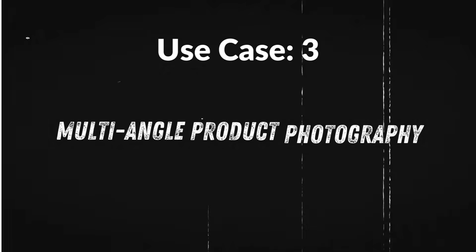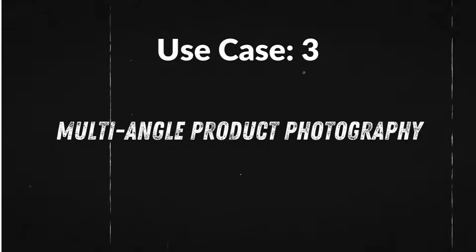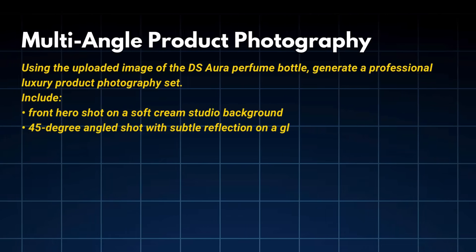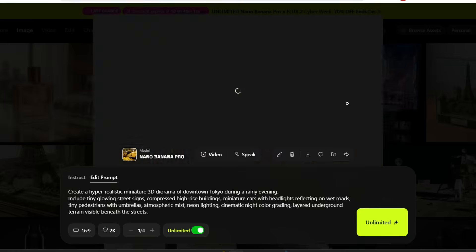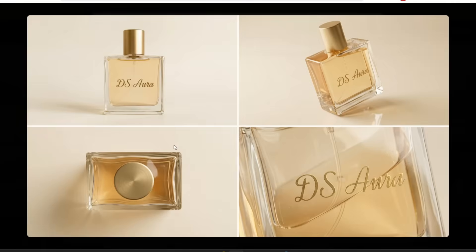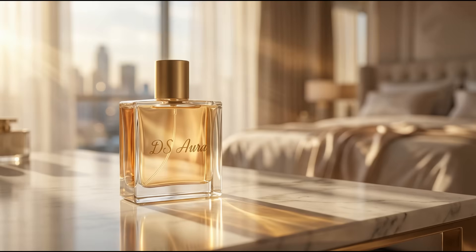Use case 3: Multi-angle product photography. This is where Nano Banana Pro turns into a full luxury commercial photography studio. I upload my product image and add the prompt 'Generate multi-angled product shots as well as a lifestyle shot.' This looks like it came straight from a premium perfume brand website — the hero shot perfectly centered, glass edges catching soft reflections, and the macro texture shot looking like it was captured with a professional product lens. In the lifestyle shot, look at the sunlight passing through the bottle, the golden liquid glowing inside the glass, and the reflections on the marble surface.